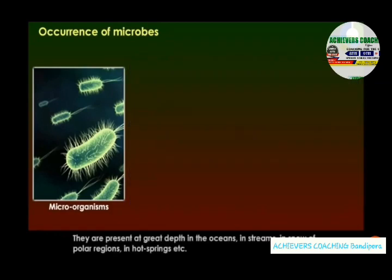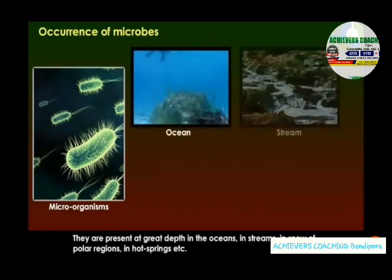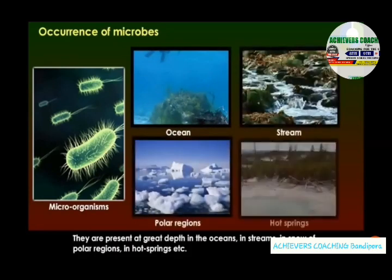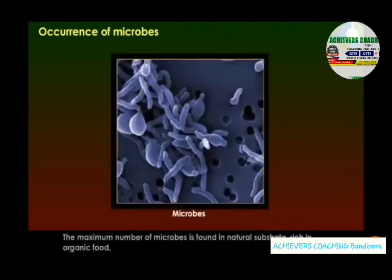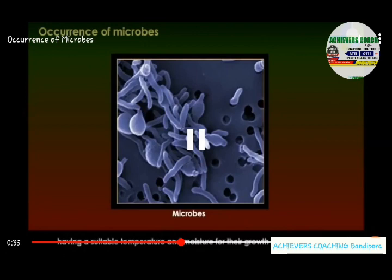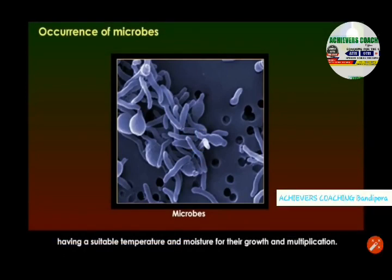They are present at great depth in the oceans, in streams, in the snow of polar regions, in hot springs, and more. The maximum number of microbes is found in natural substrata rich in organic food, having a suitable temperature and moisture for their growth and multiplication.